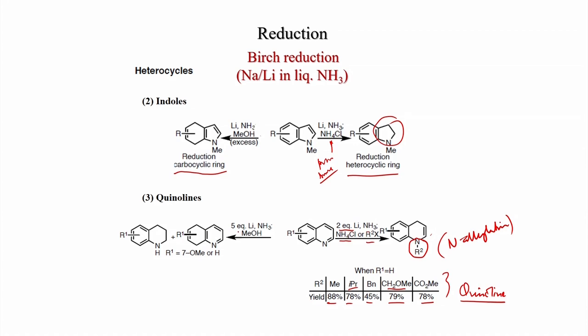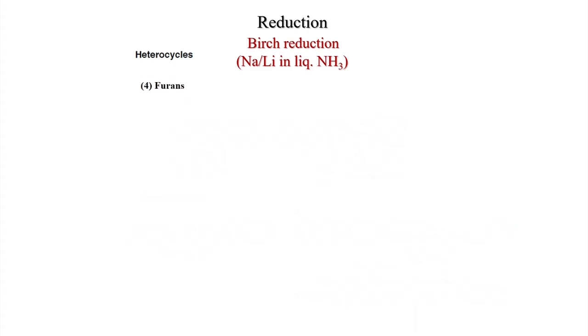When a higher equivalent of lithium in ammonia and methanol is used, a mixture of products results: in one case the heterocyclic ring is completely reduced, and in another case the benzene ring is partially reduced. For R1 = 7-methoxy or hydrogen, these kinds of products are obtained.